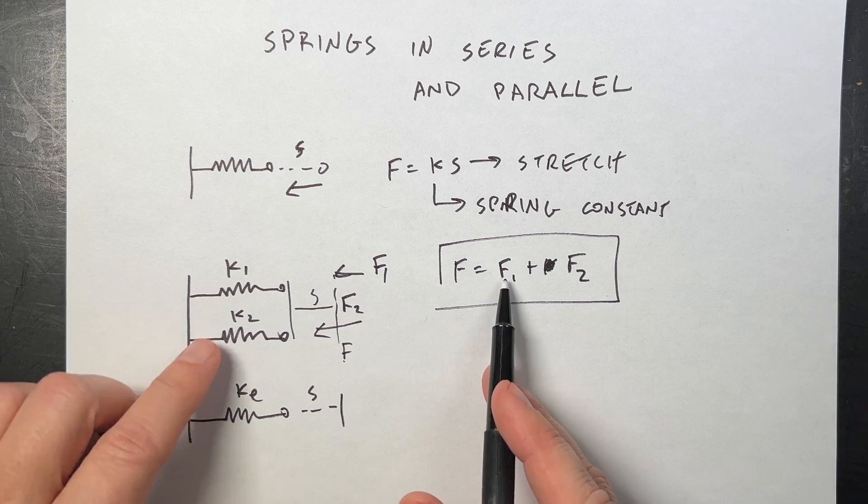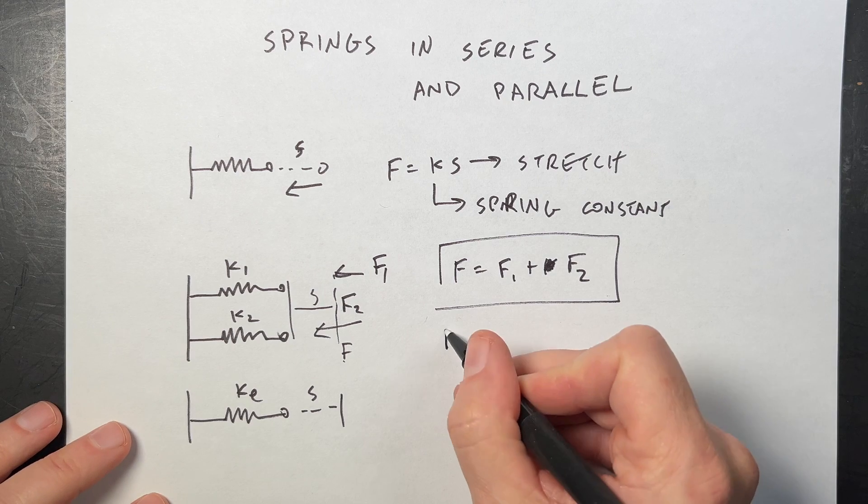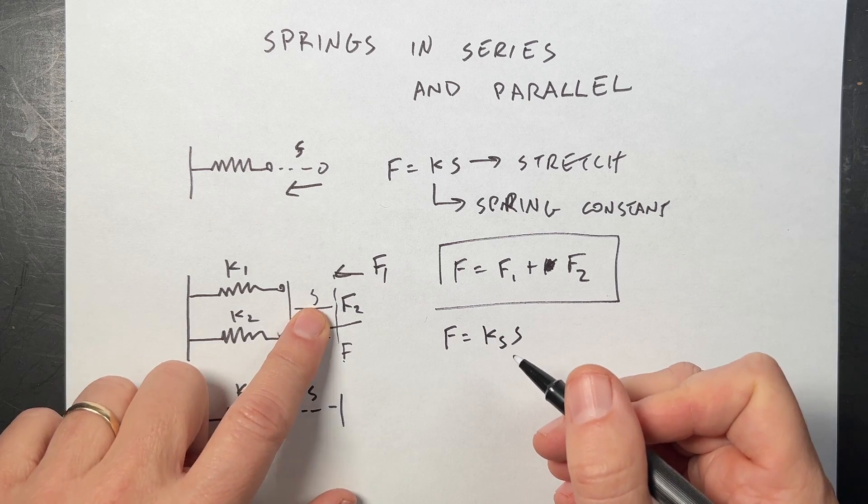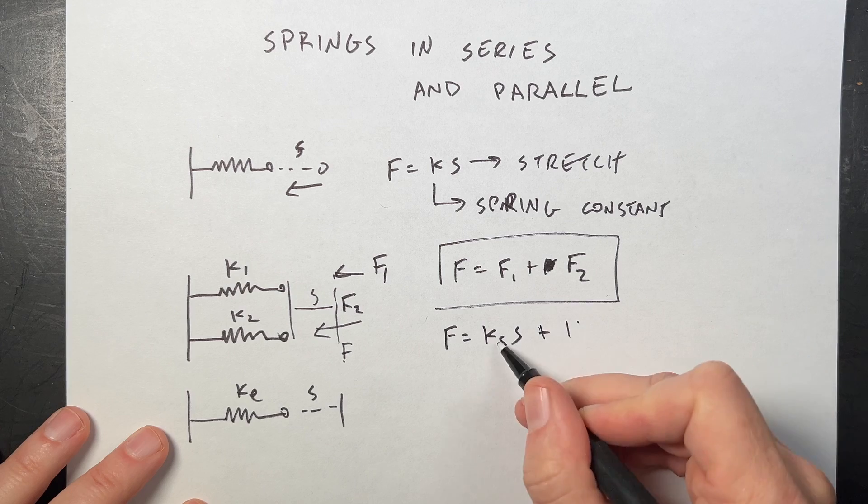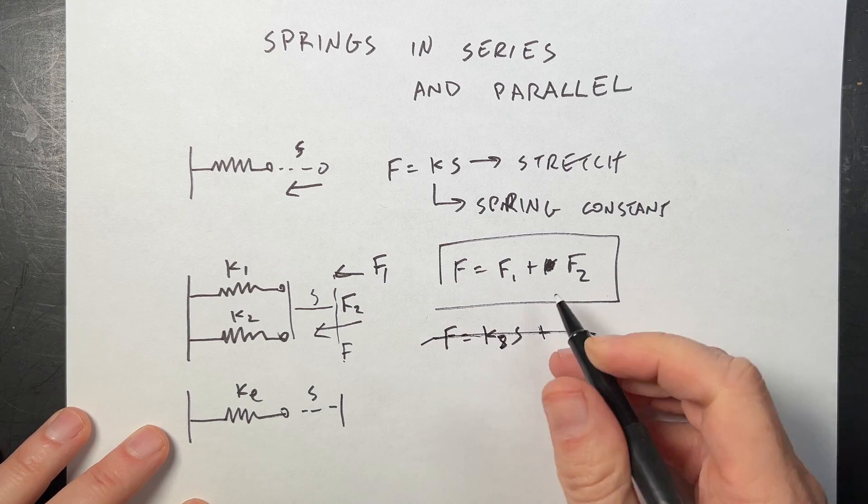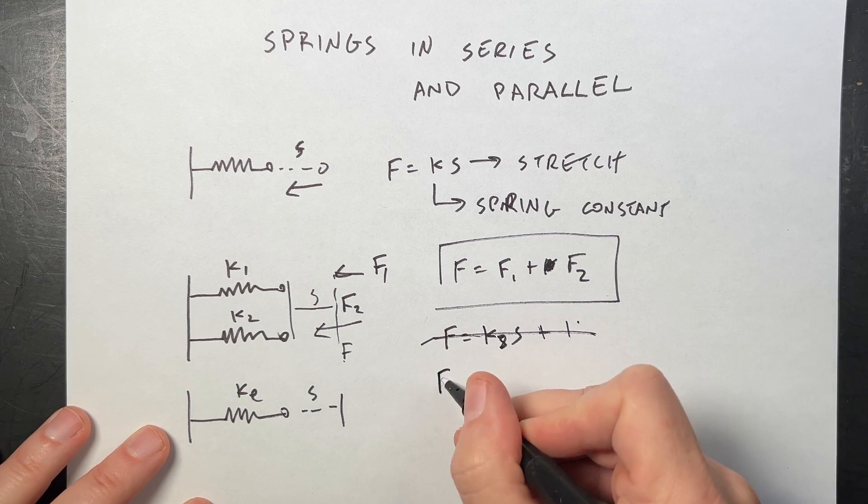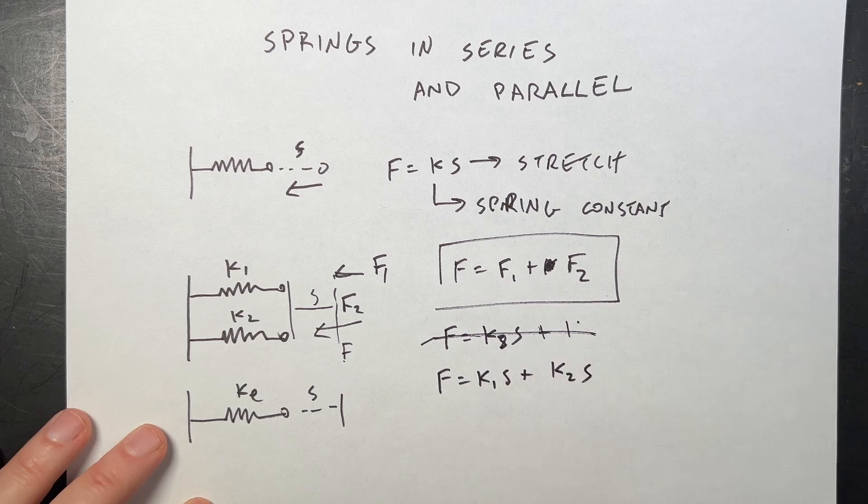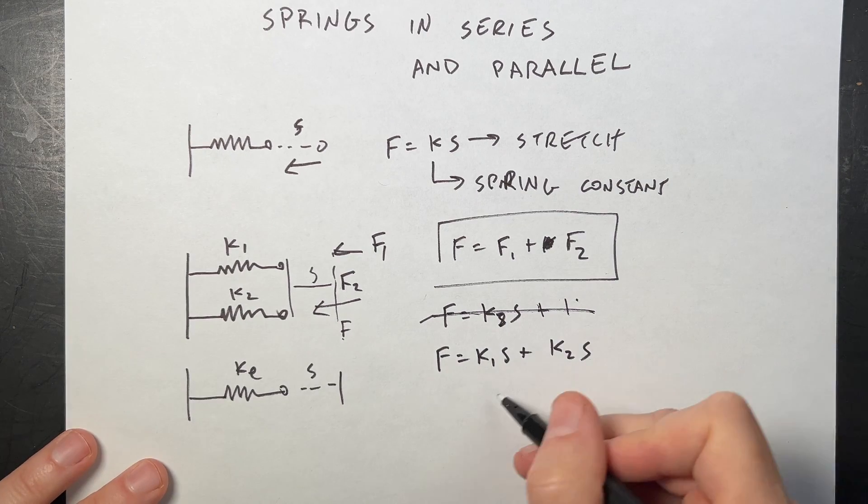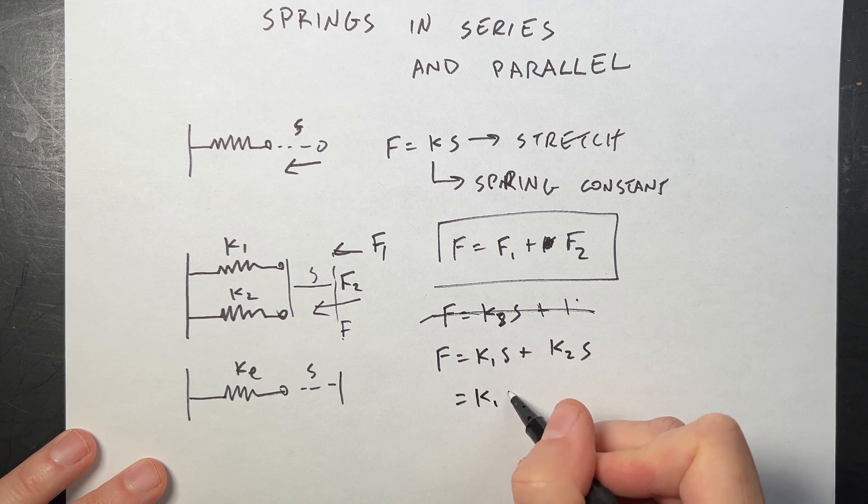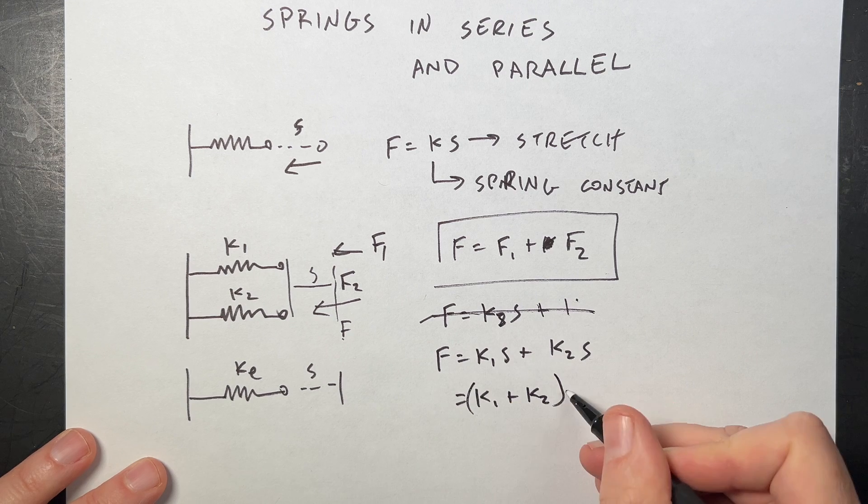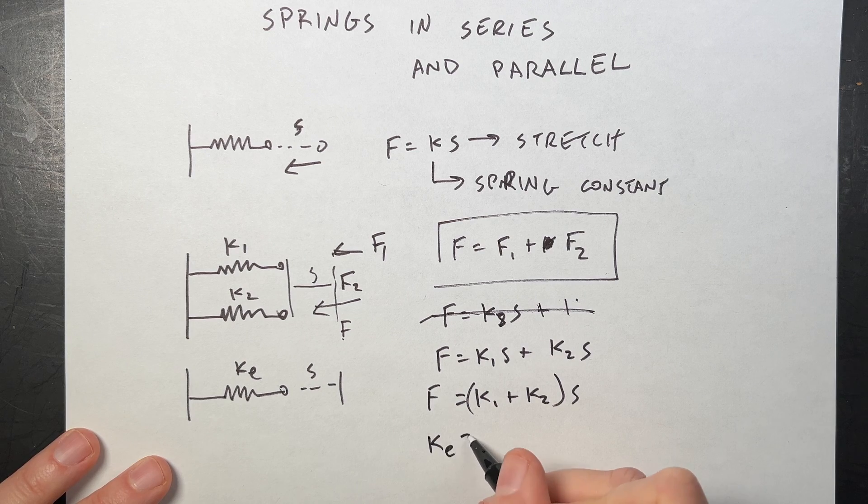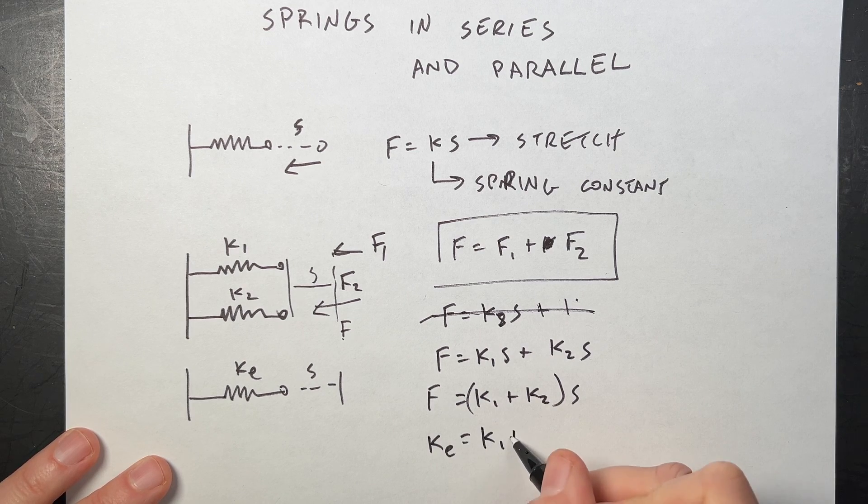Now I can write these in terms of K and S. So this would be equal to F. F1 is going to be K1 times S, it's stretched the distance S. And then F2 is going to be K2S. F equals K1S plus K2S. And then I can just factor out the S, and I get K1 plus K2 times S.